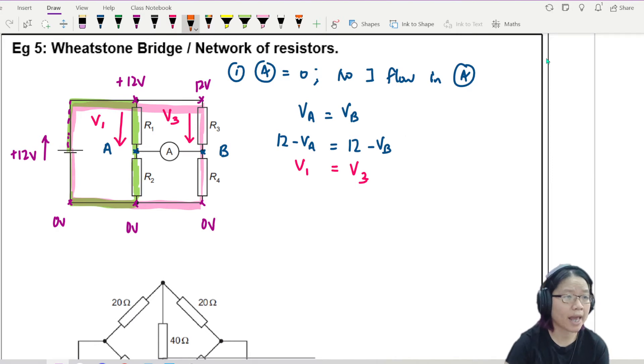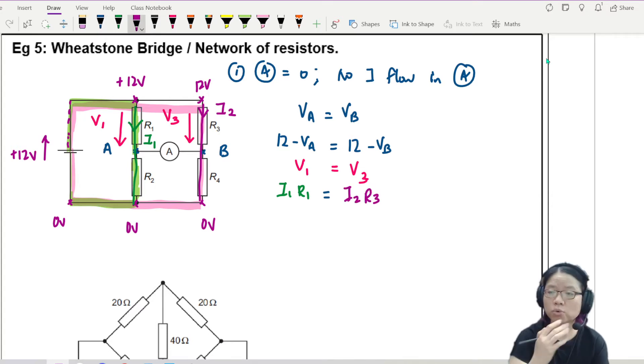So if you think about this, this battery will boost up the potential here to be 12 volt, and it will also boost up this side to be 12 volt as well. So if I say VA is equal to VB, it means that whatever potential drop that happens here, V1, must be the same as the potential drop that happens here, V3. Because 12 minus VA must be equal to 12 minus potential at B, and 12 minus VA is V1, and 12 minus VB is V3.